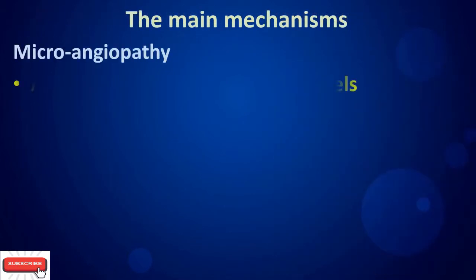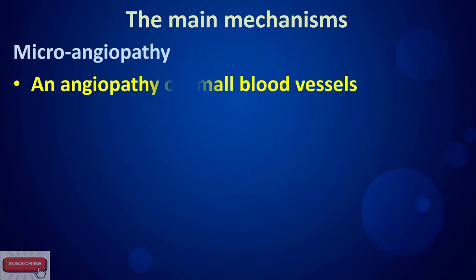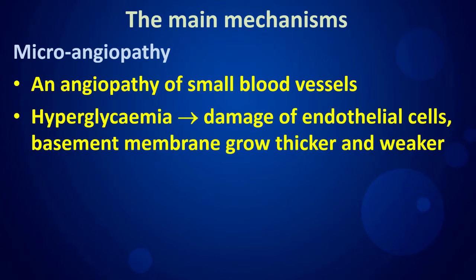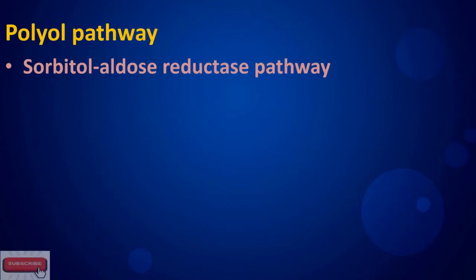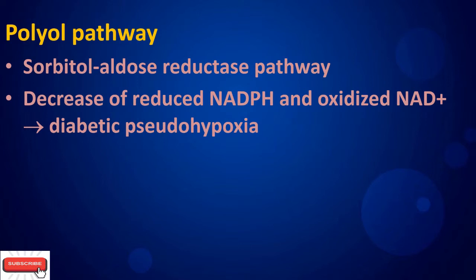Macroangiopathy and angiopathy of small blood vessels: hyperglycemia causes damage to endothelial cells, the basement membrane grows thicker and weaker. The polyol pathway — also known as the sorbitol aldose reductase pathway — leads to a decrease of reduced NADPH and oxidized NAD+, contributing to diabetic complications.